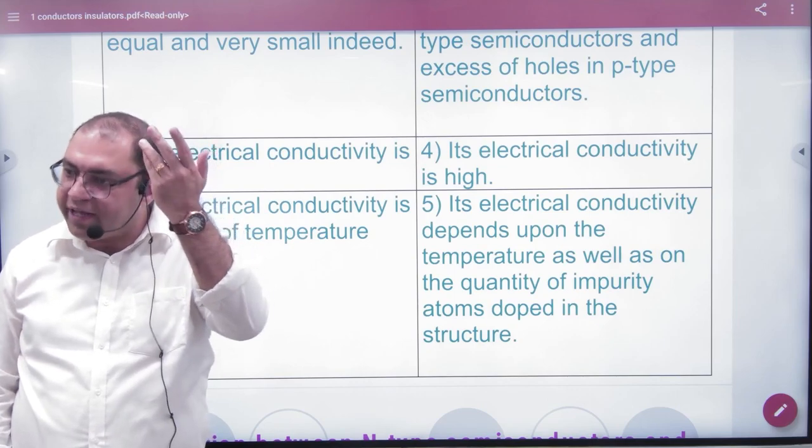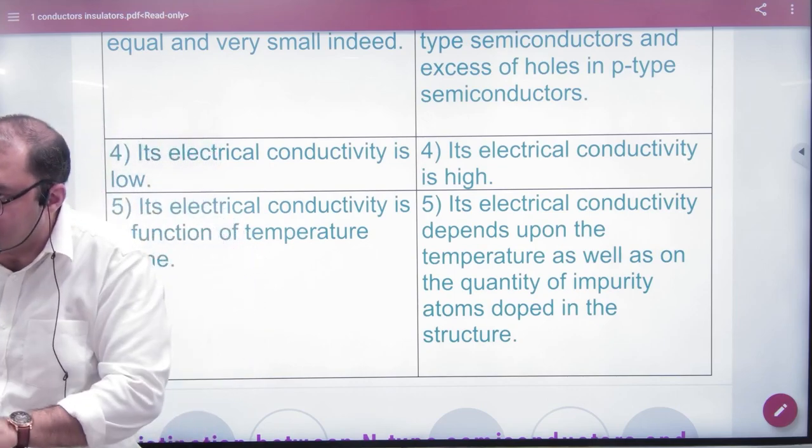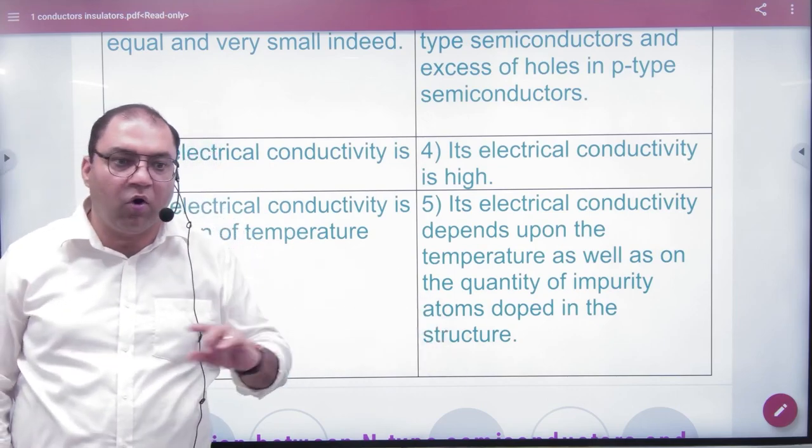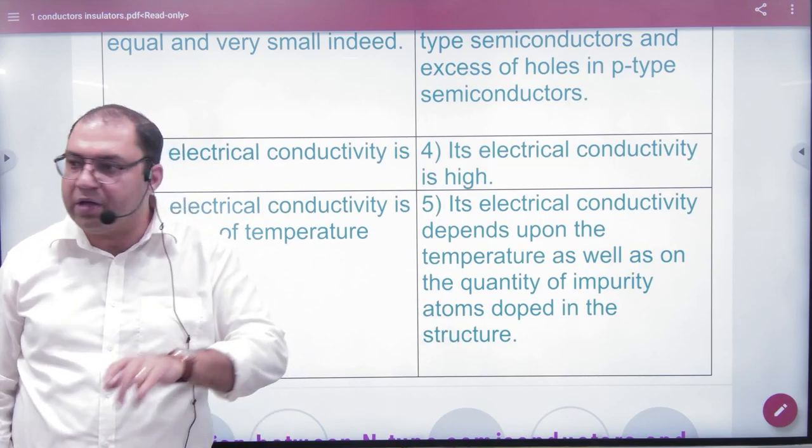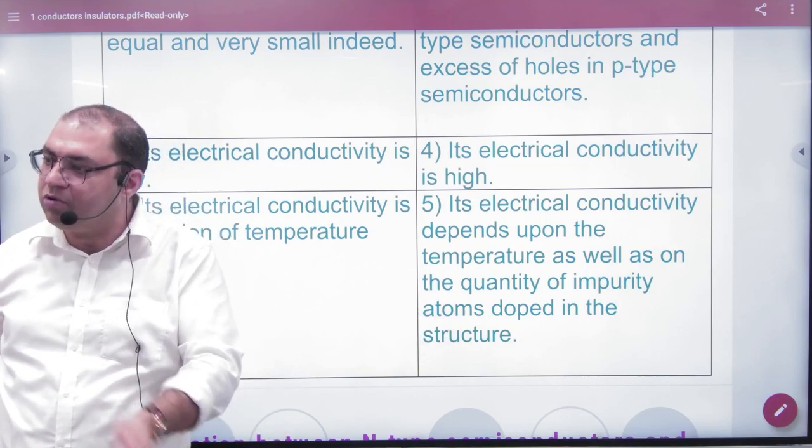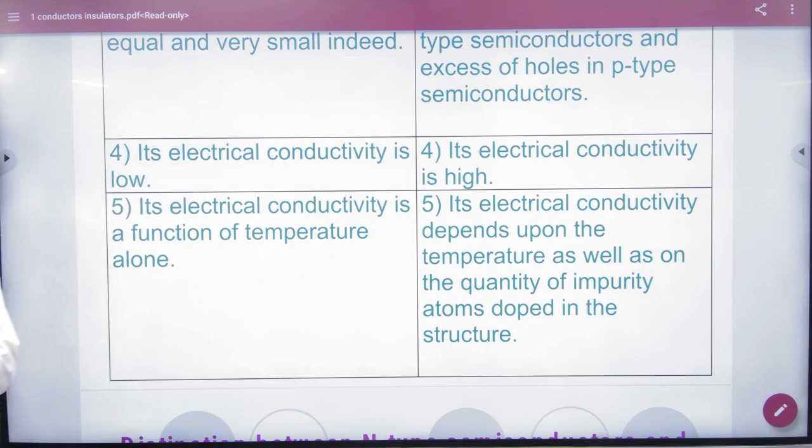The doping provides electrons or holes which, combined with temperature effects, means that electrical conductivity depends on both temperature and the quantity of impurity atoms doped in the structure.